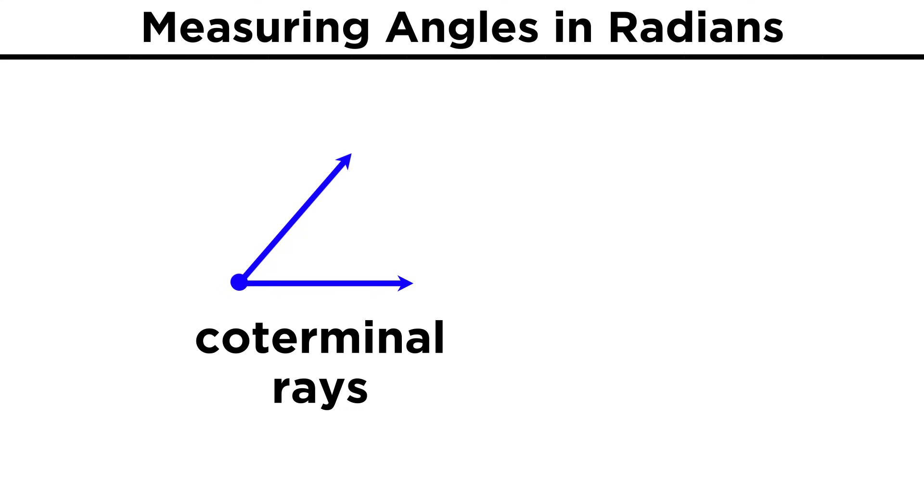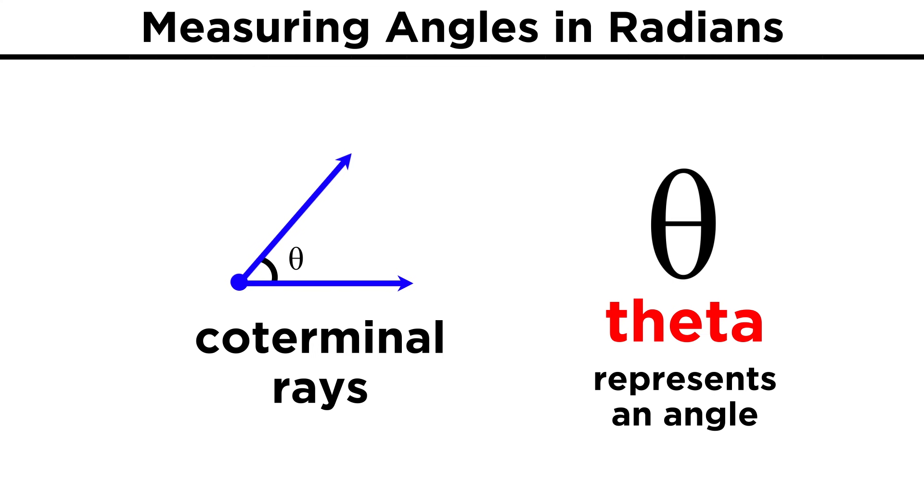Here are two coterminal rays. This means they start at the same point, and then go on indefinitely in different directions. Between them, there is an angle.